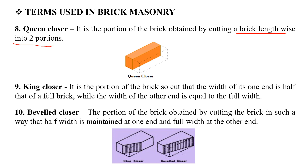King closer is the portion of a brick so cut that the width of its one end is half that of the full brick while the width of the other end is equal to the full width. We mark the points on the header portion and the remaining part of the brick is the king closer.